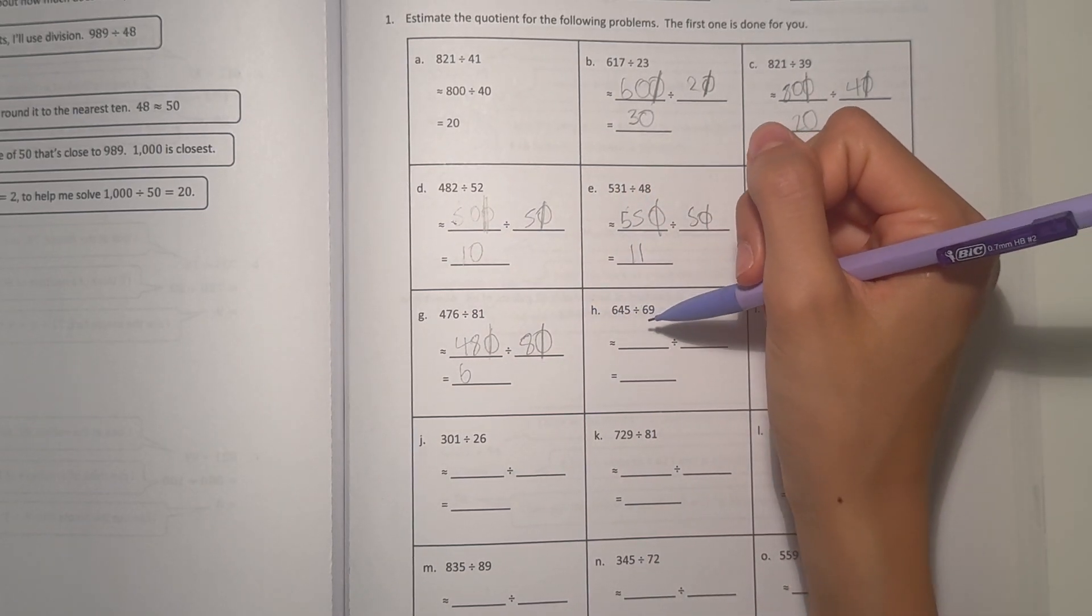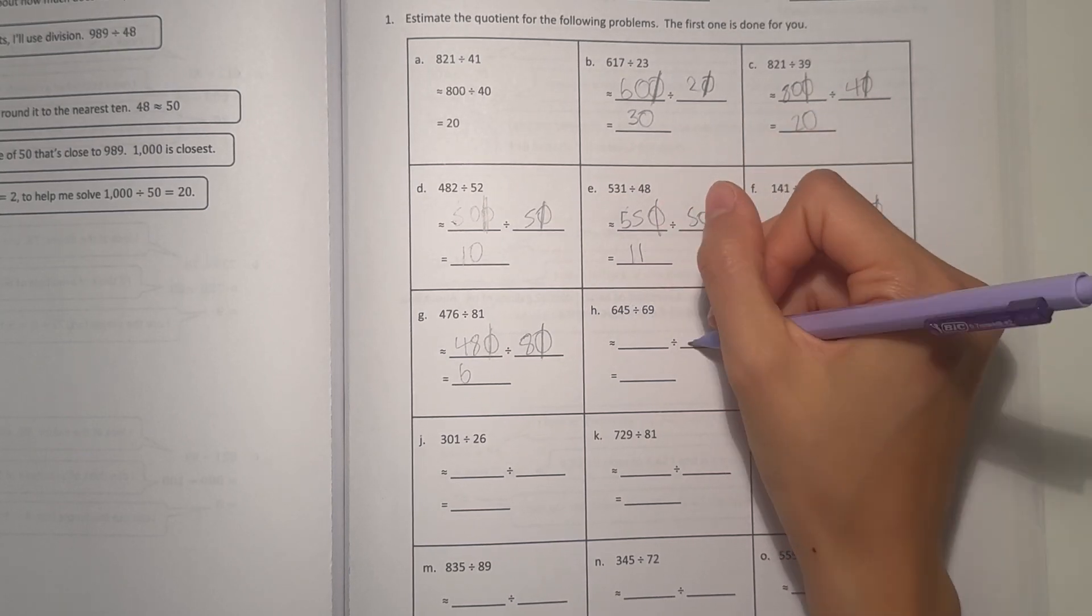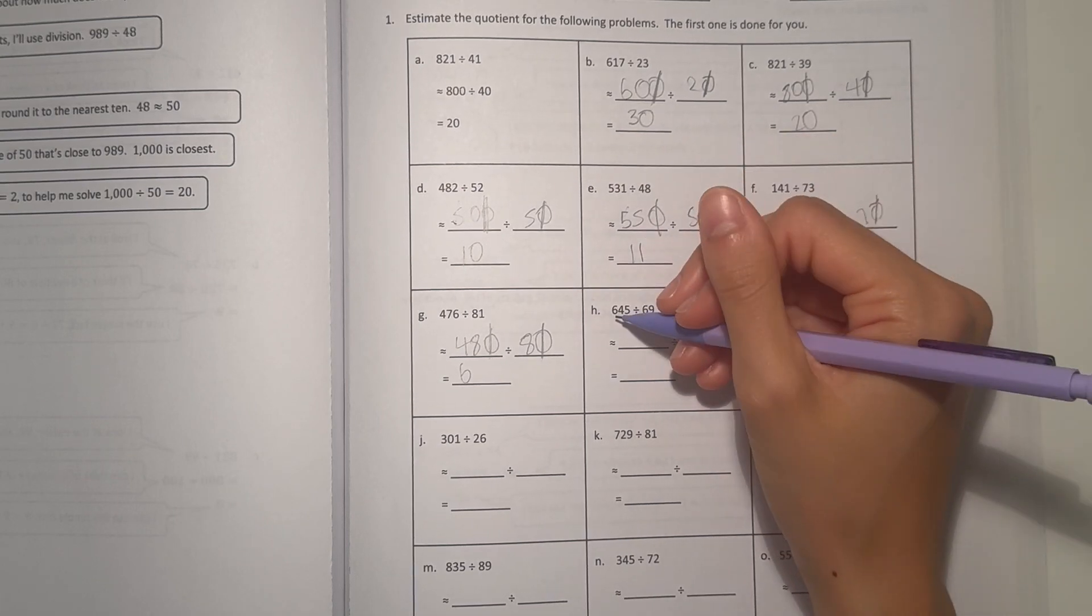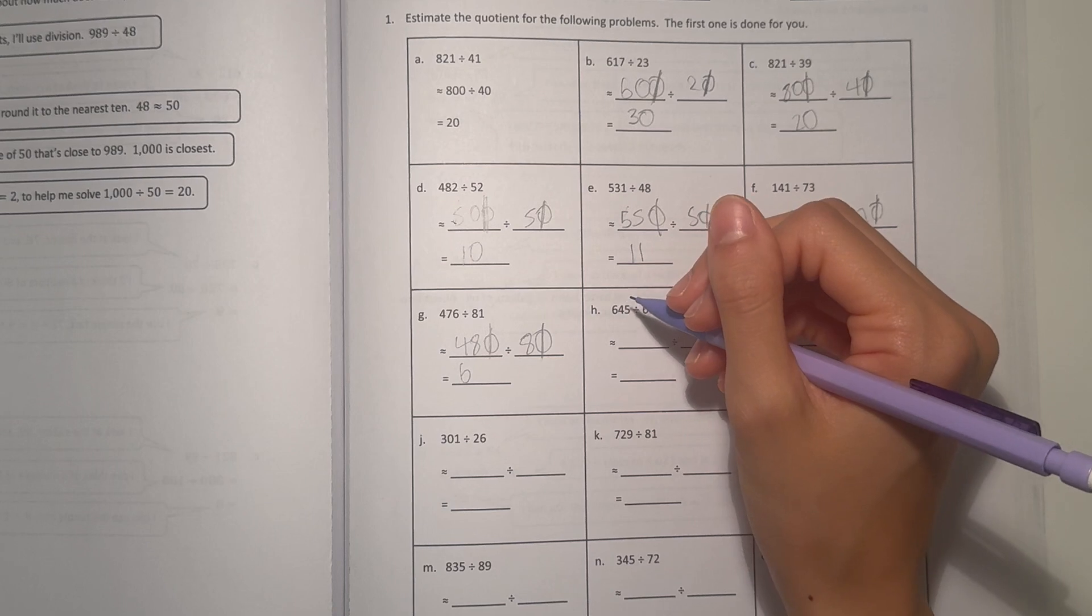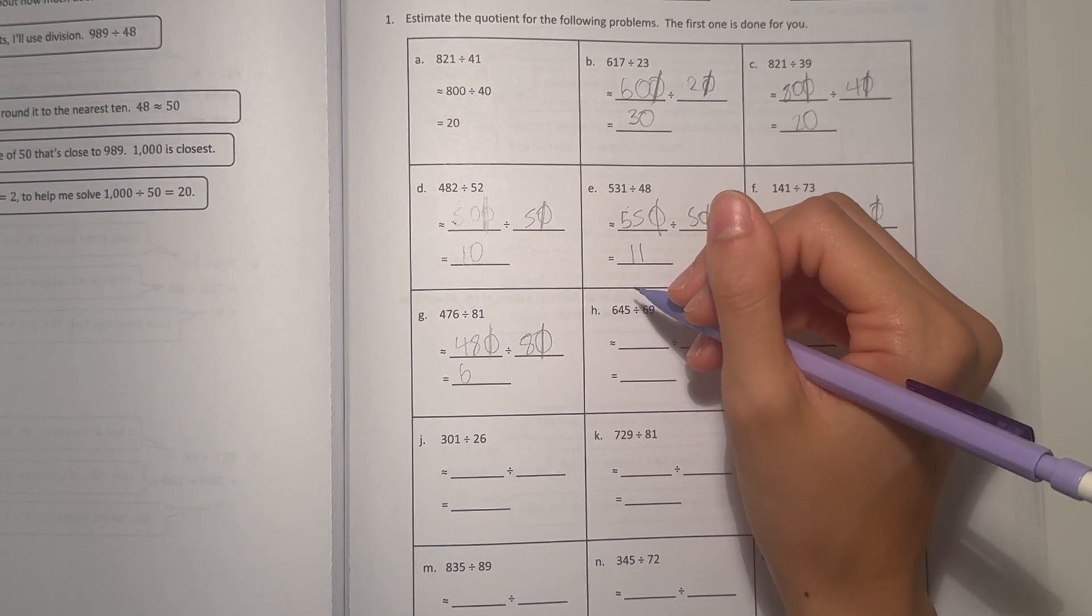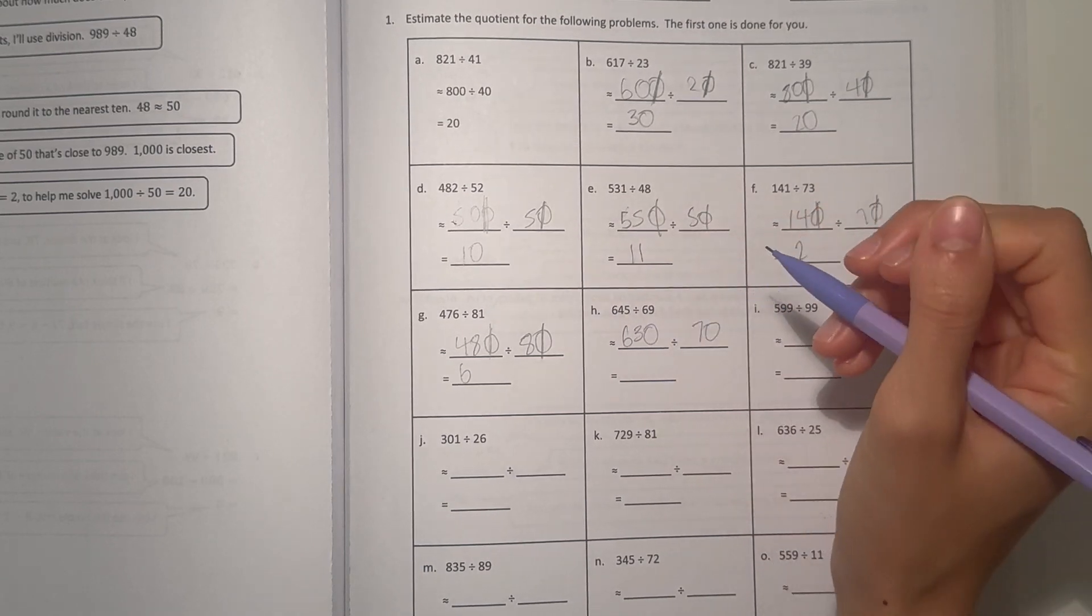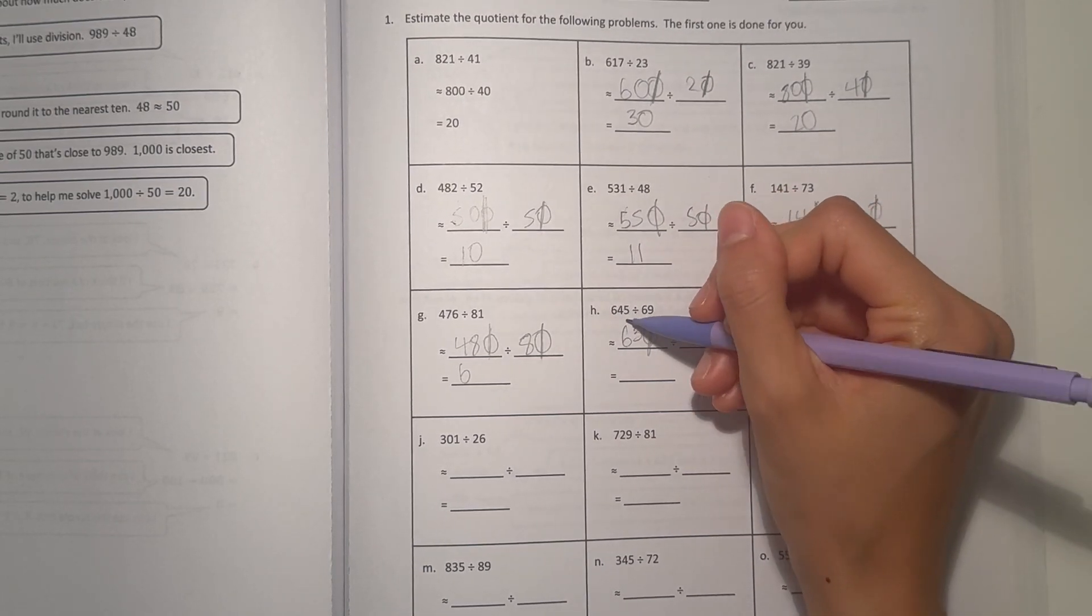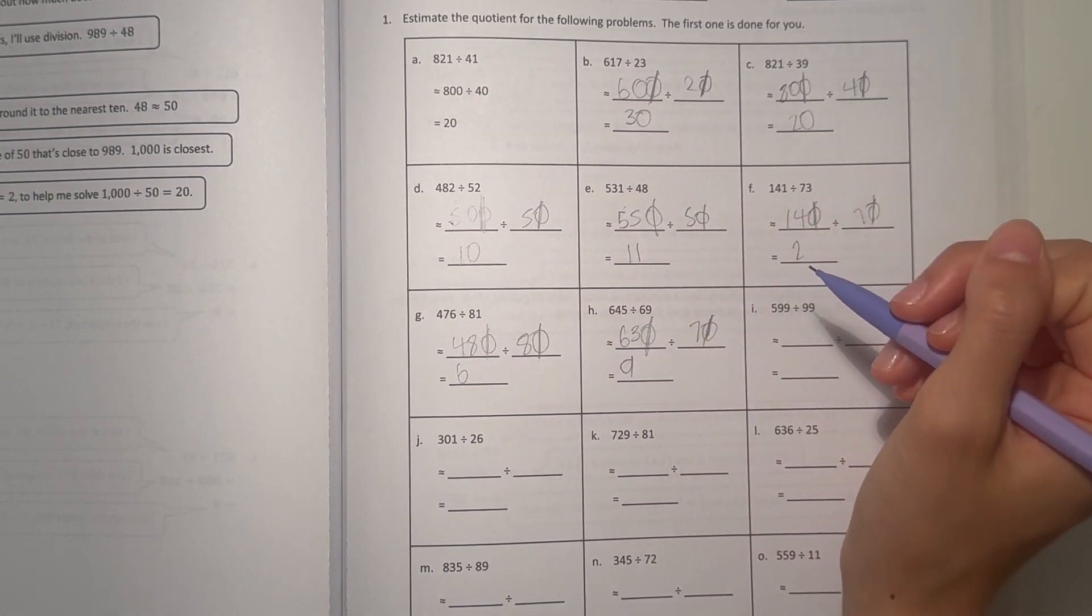All right, and H, 645 divided by 69. 69 rounds to 70. So what number close to 645 goes into 7? Well, 7 goes into 63. So we round that to 630, cross off the zeros. 7 goes 9 times into 63. So our estimate would be 9.